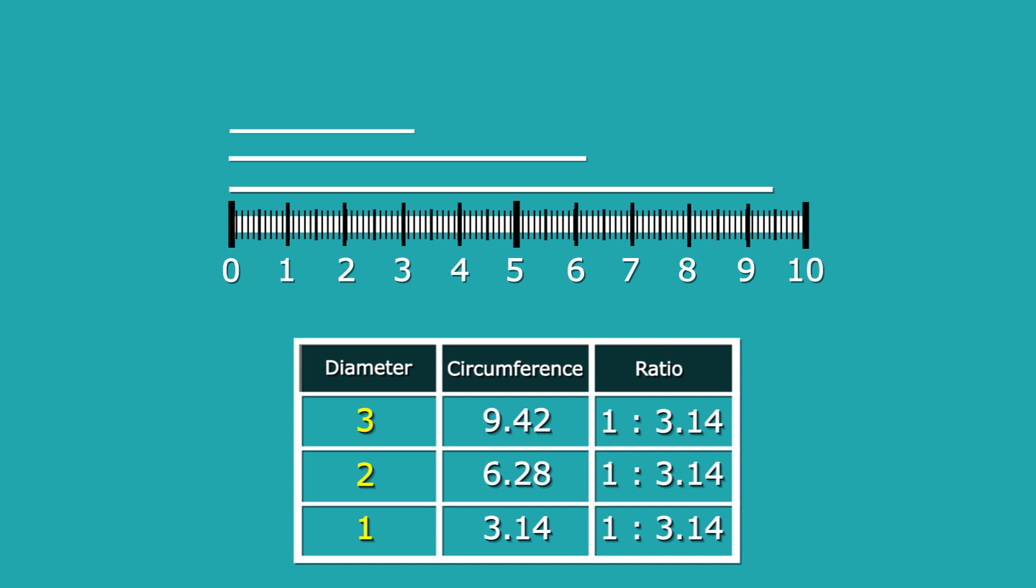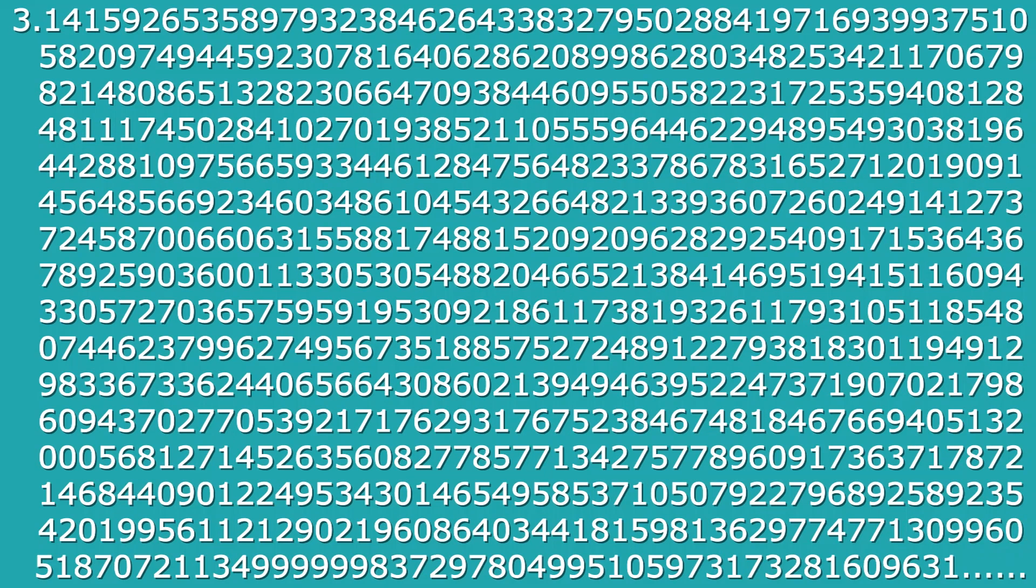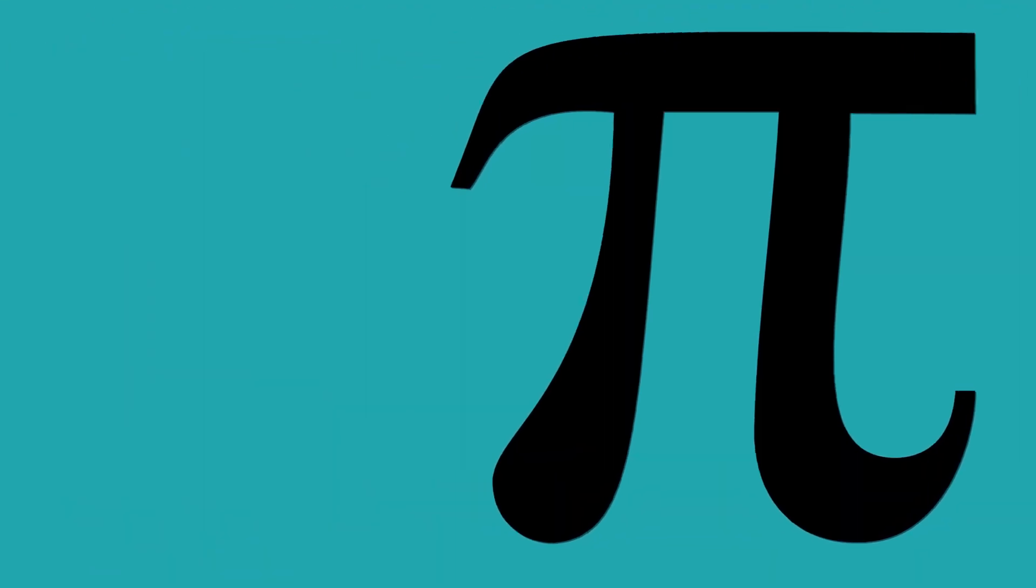And in fact, this is true for every circle. No matter how big or small your circle is, the ratio between the circumference and the diameter is always going to be 3.14. In fact, it's not quite going to be 3.14. It's going to be a little bit bigger than that. It's going to be 3.14159. I'm going to stop there, because this ratio actually has an infinite number of digits. And instead of writing out all these digits every time we want to find a circumference, we use a symbol to represent it. And that symbol is pi.